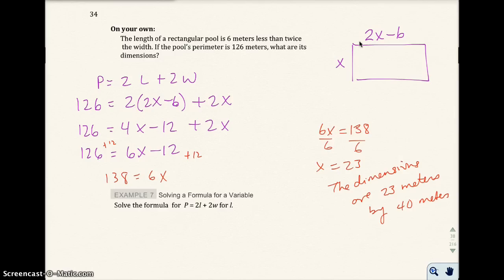Here's one great thing about this problem, is you can actually check this. If the dimensions are 23 by 40, that means if I draw my rectangle, this should be 23 and 23, this should be 40 and 40. Add all those up. Okay, so I'll go ahead and put my calculator out. 23 plus 40 plus 23 plus 40, I get a total of 126, and that is the perimeter, the total all the way around.